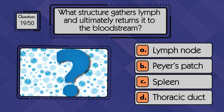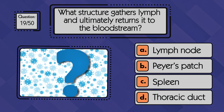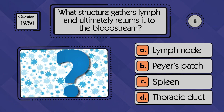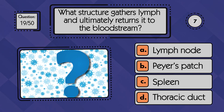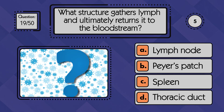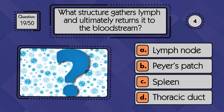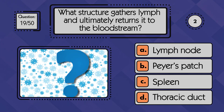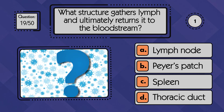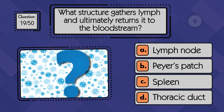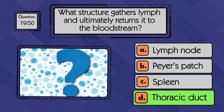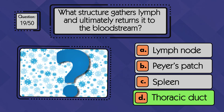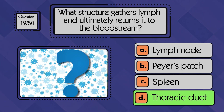What structure gathers lymph and ultimately returns it to the bloodstream? Lymph is collected from most of the body by the thoracic duct and returned to the bloodstream.